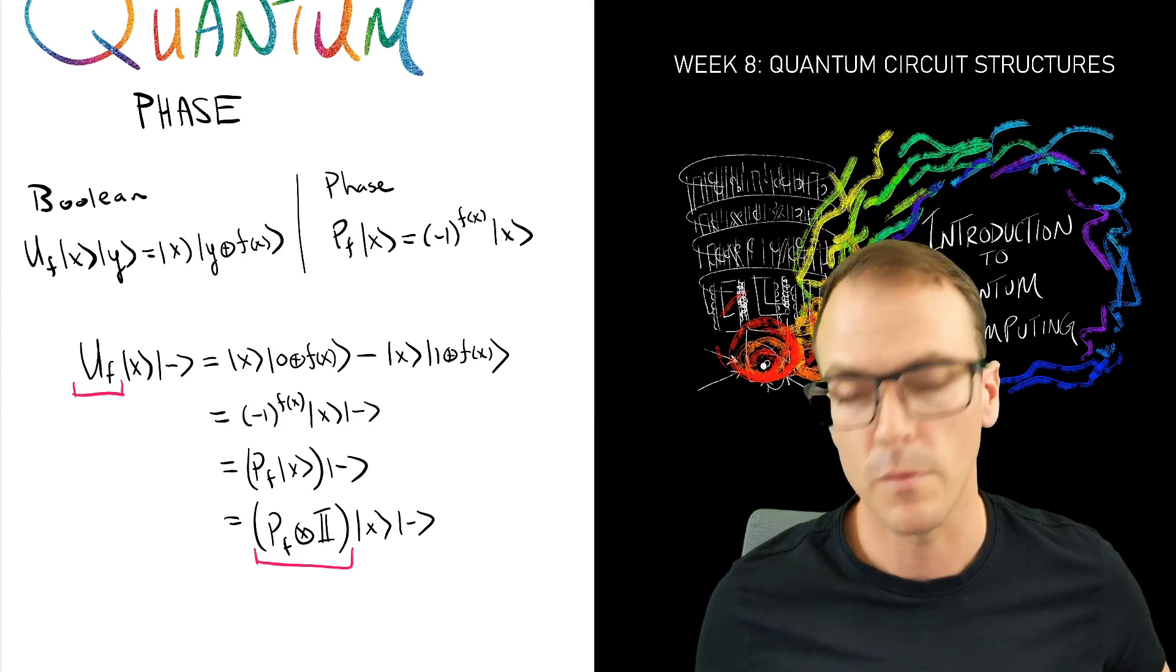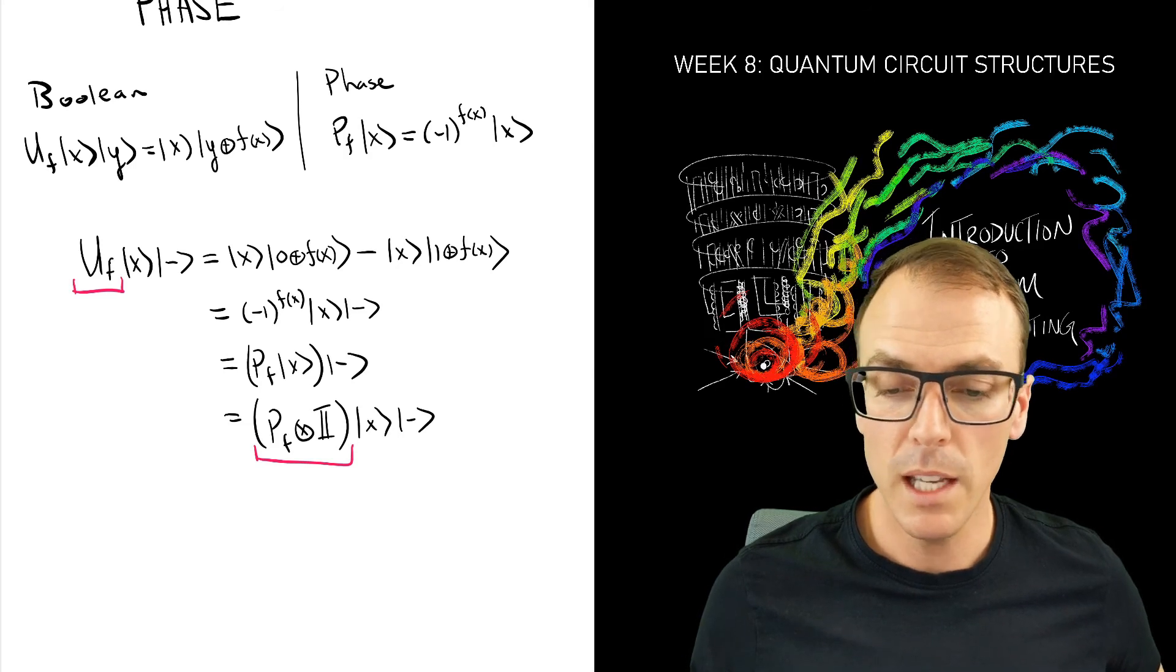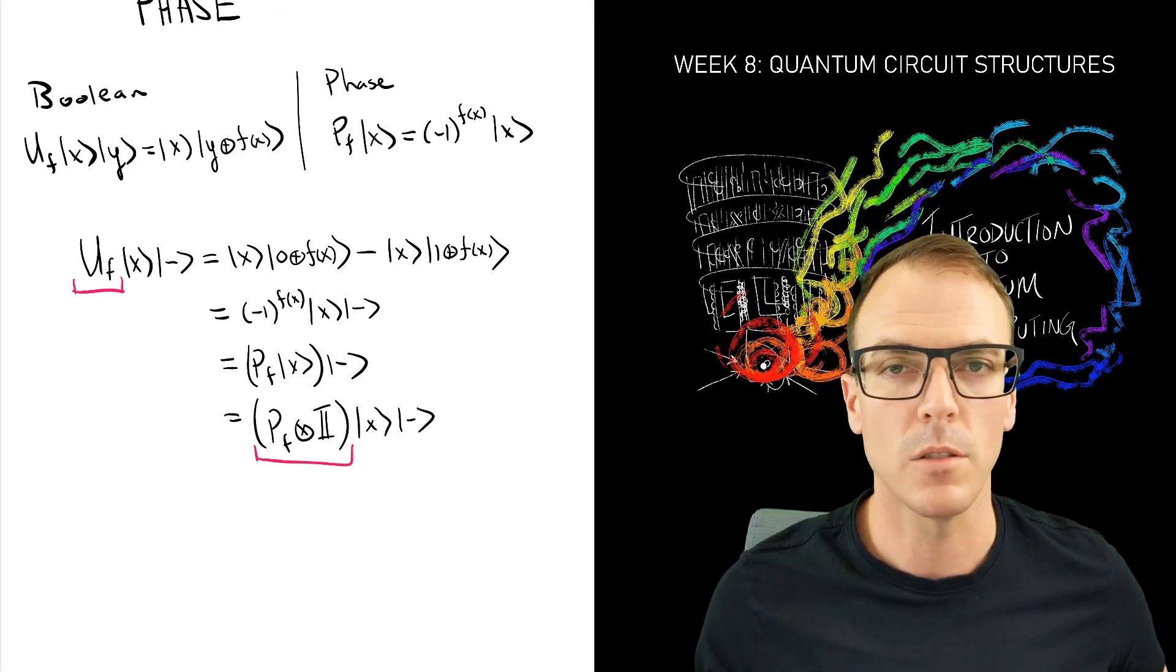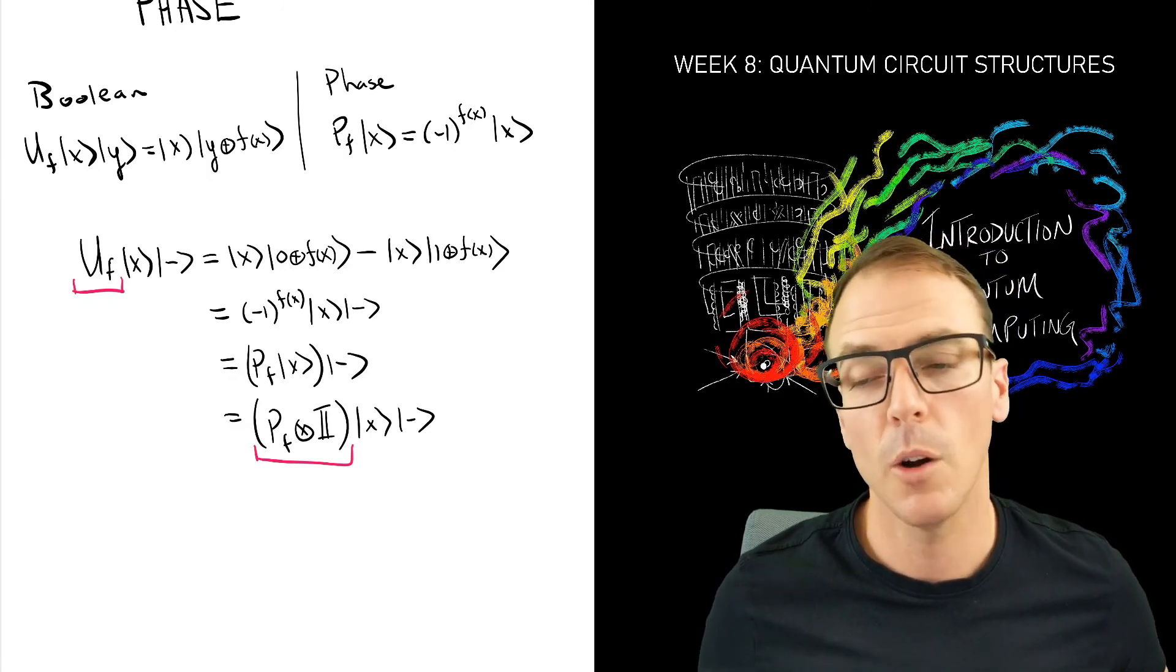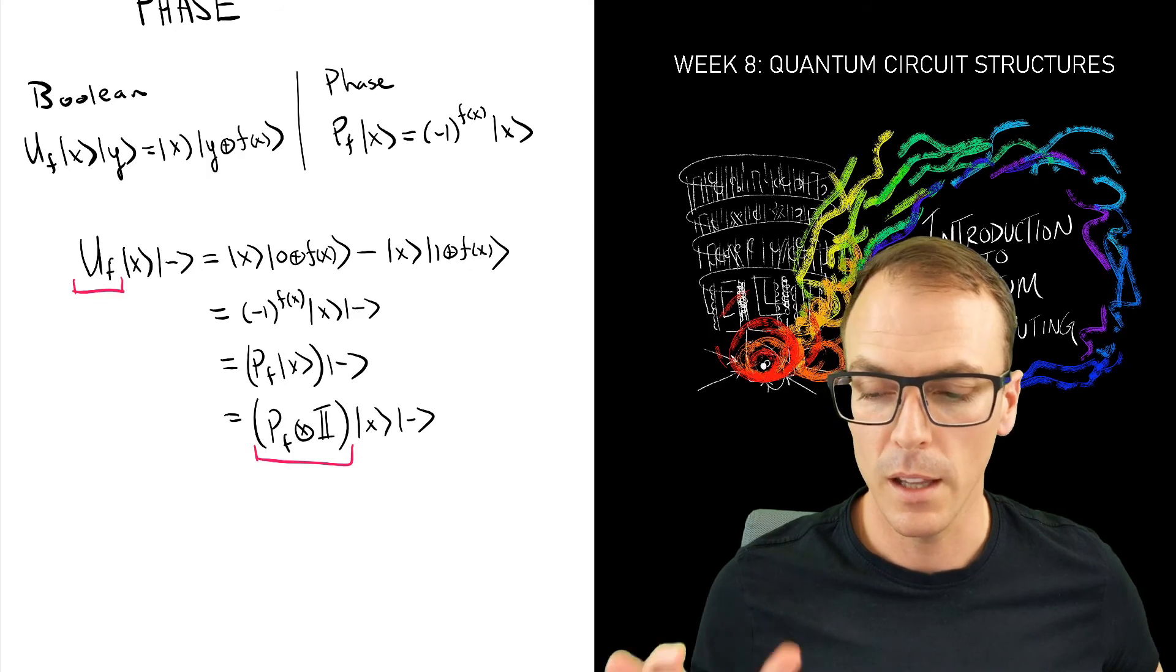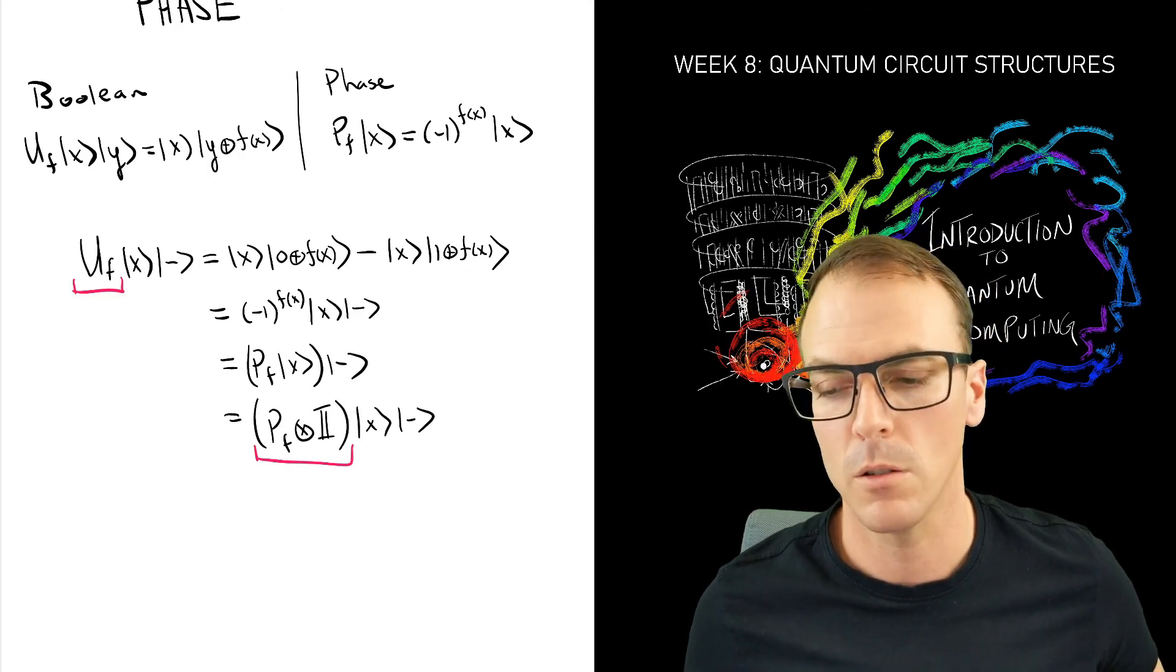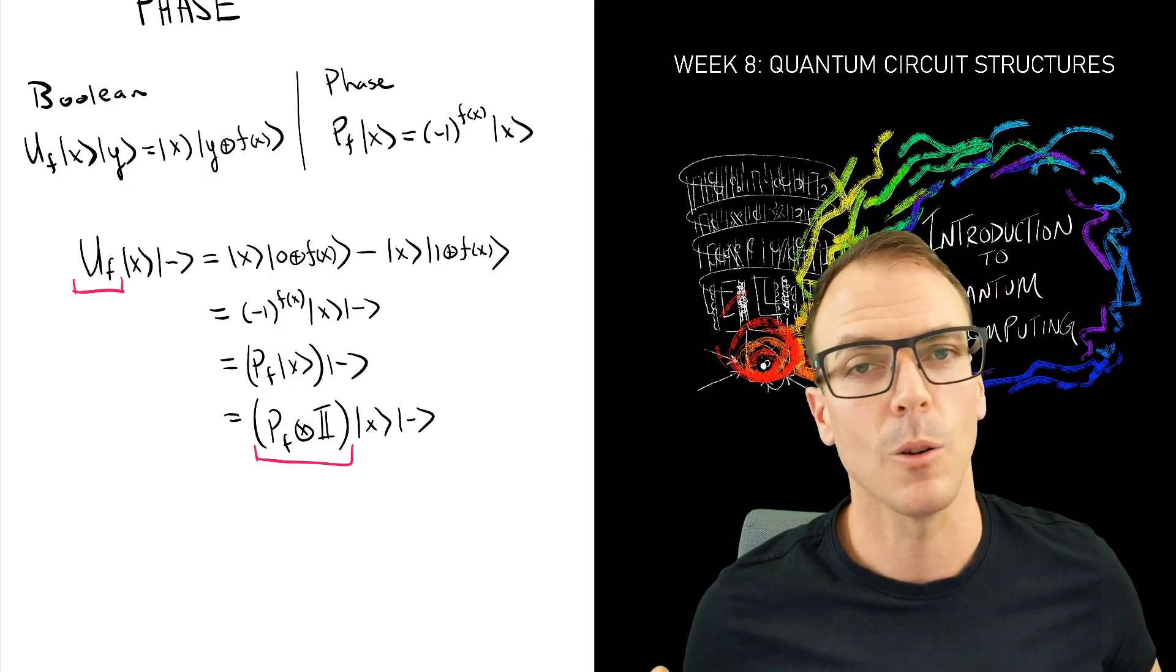So we can get a phase oracle from a boolean oracle and vice versa. If we need a phase oracle to manipulate phases and create superpositions so that we get some constructive and destructive interference, but we only know how to implement a boolean oracle, that's okay—we can put a minus state as we did in the Deutsch-Jozsa algorithm in that output register to create the phase oracle.